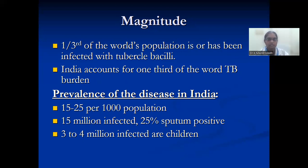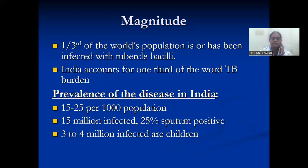Coming to the prevalence in India, it is 15 to 25 per thousand population. 15 million are infected and 25% are tuberculin positive. 3 to 4 million of the infected are children. This is about the prevalence of the disease in India.